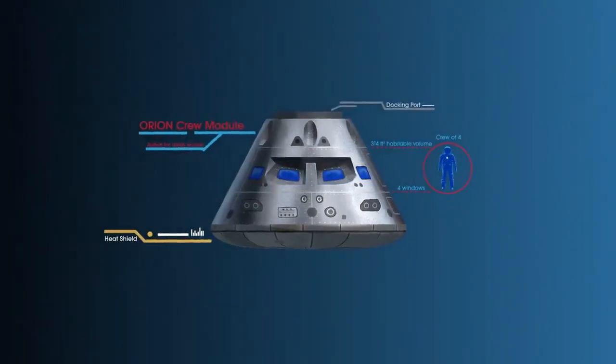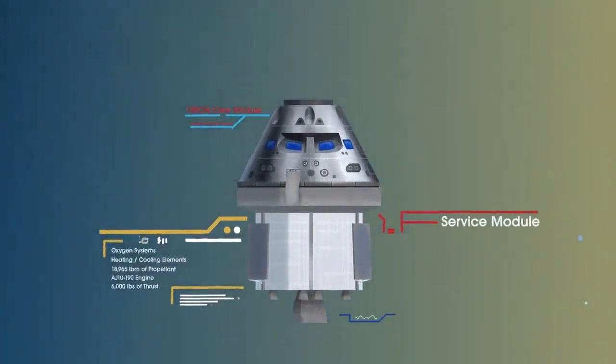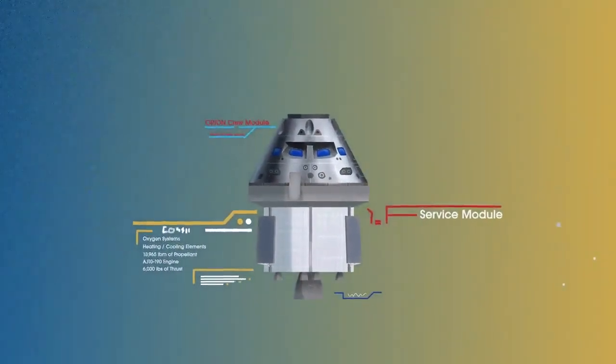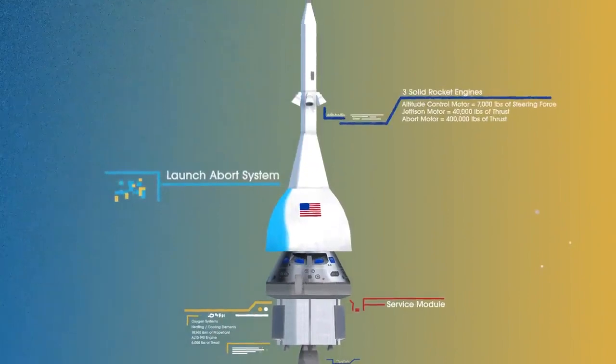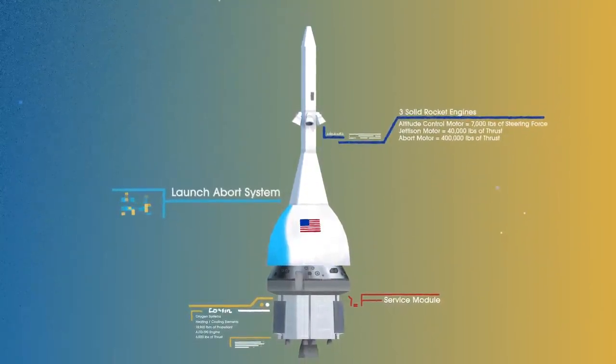The crew module, where up to four astronauts will live and work throughout the flight. The service module, with life-support systems for the crew and its own engine and fuel reserves, and a launch abort system, with engines capable of pulling the crew module to safety during launch should anything go wrong.